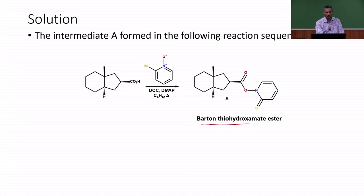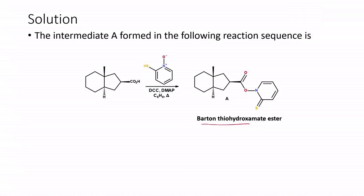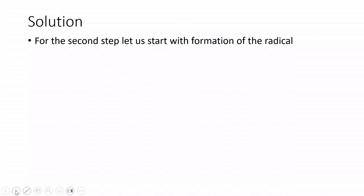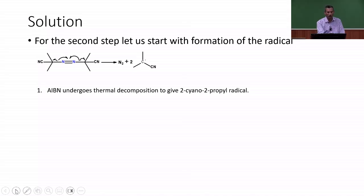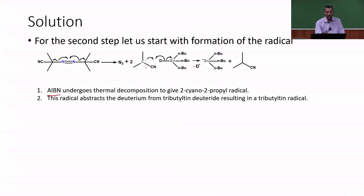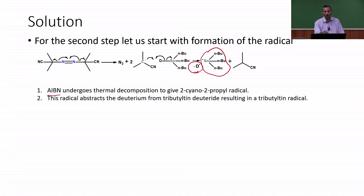In the second step, we prepare the Barton thiol hydroxamate ester as intermediate A — the single bond in the thiol shifts toward the C=S double bond. Then the radical reaction proceeds: AIBN undergoes thermal decomposition to give the cyanopropyl radical. The only difference from previous cases is that here we have a deuterium atom instead of hydrogen in tributyltin deuteride. We still obtain the tributyltin radical and the deuterium radical.